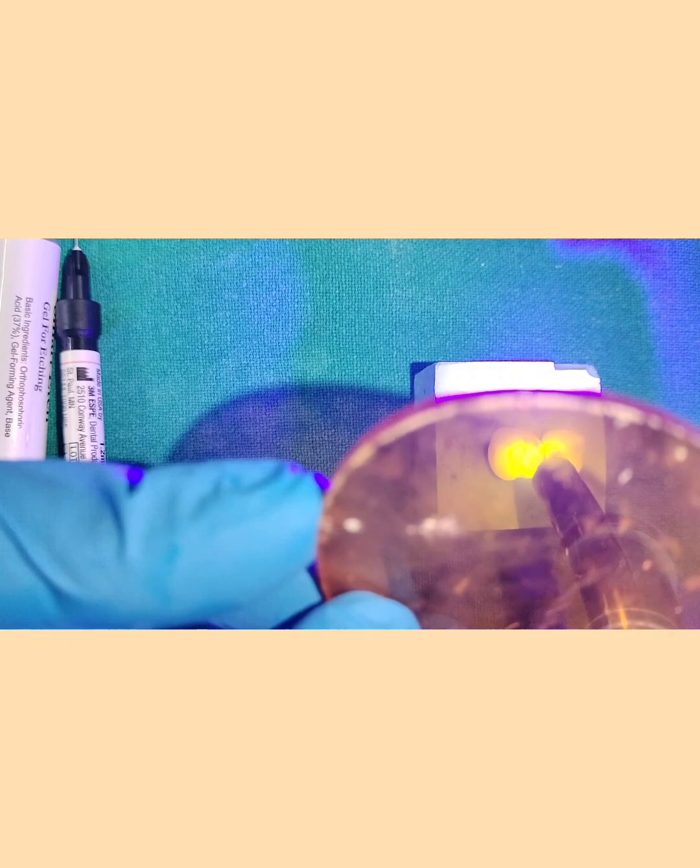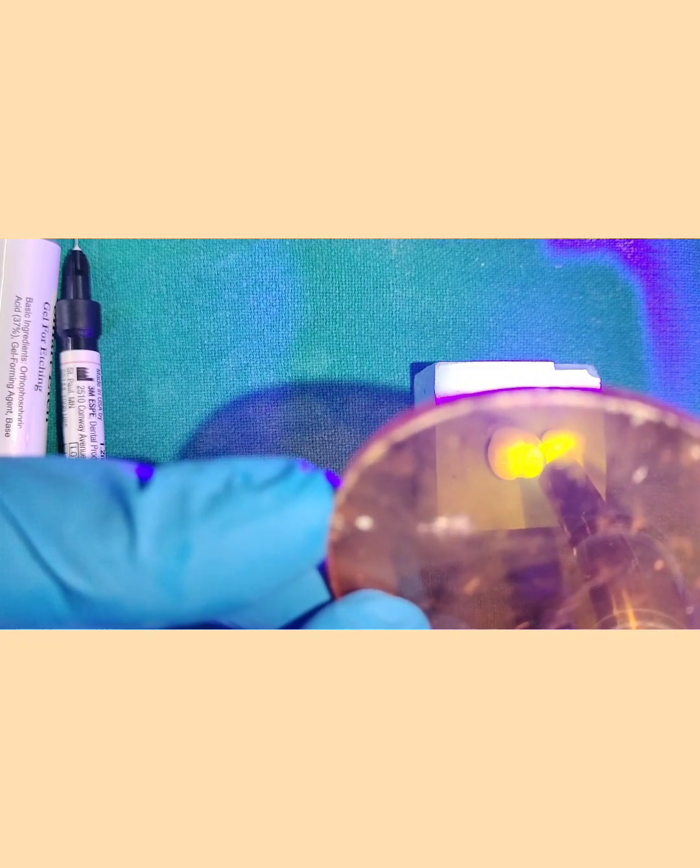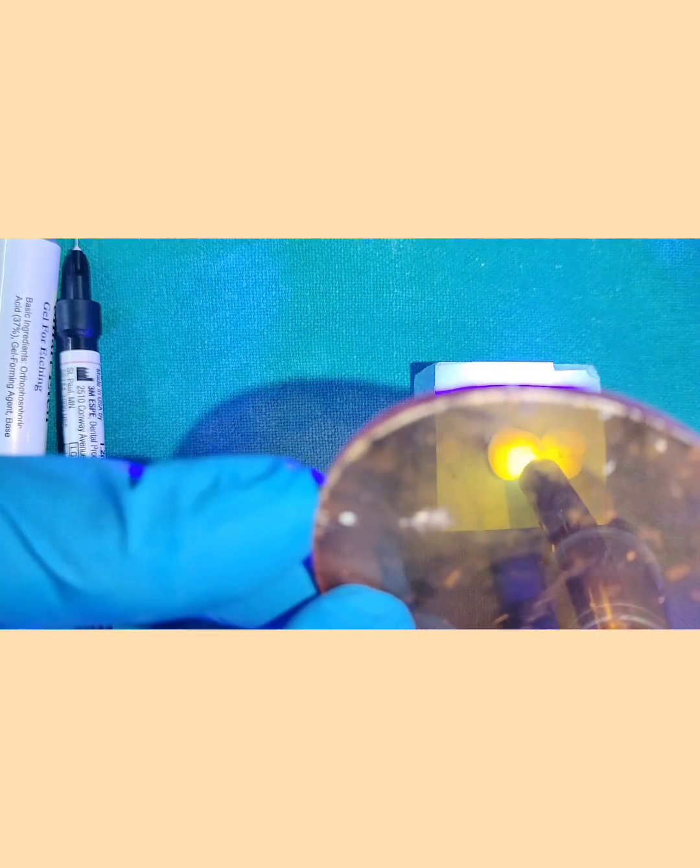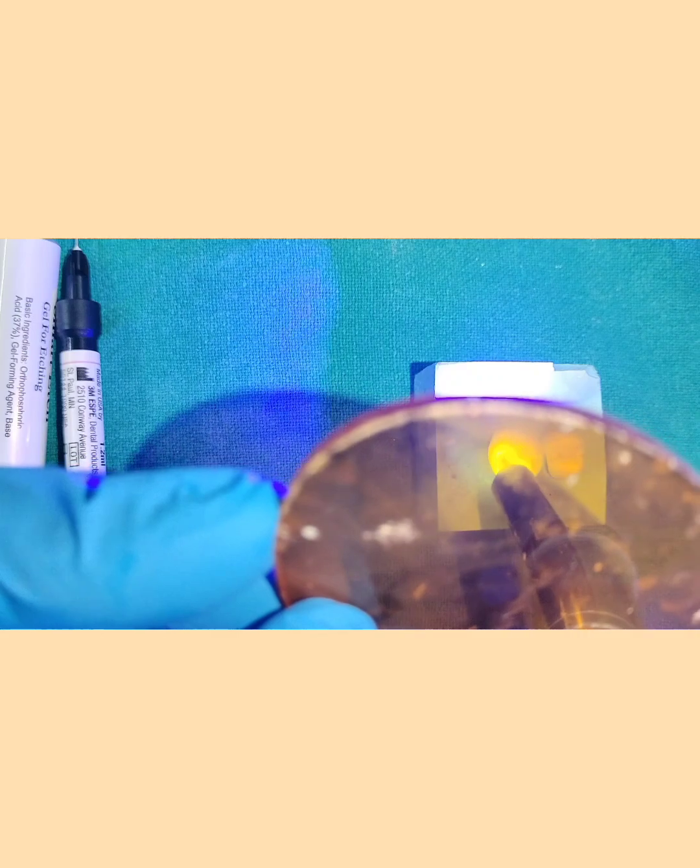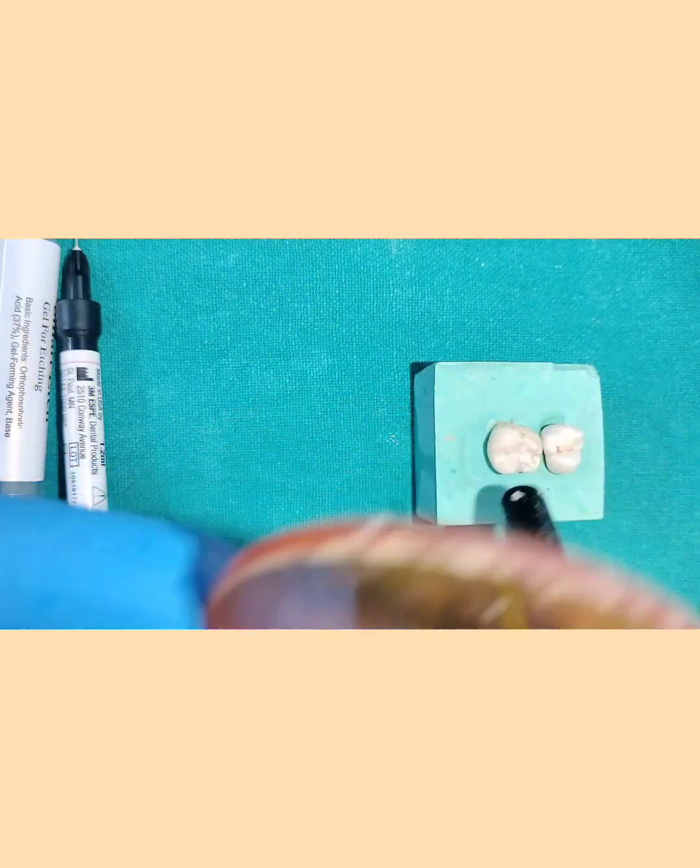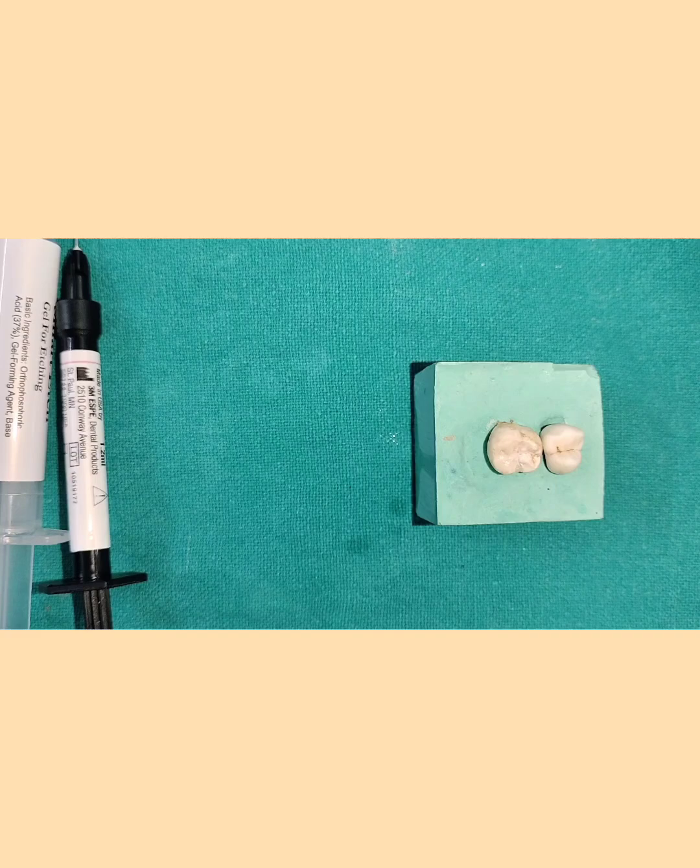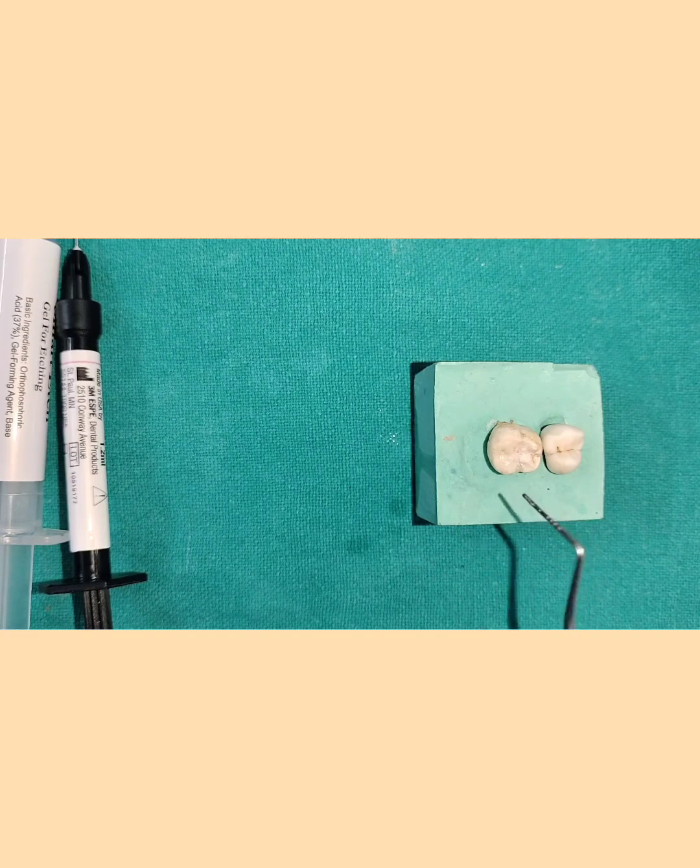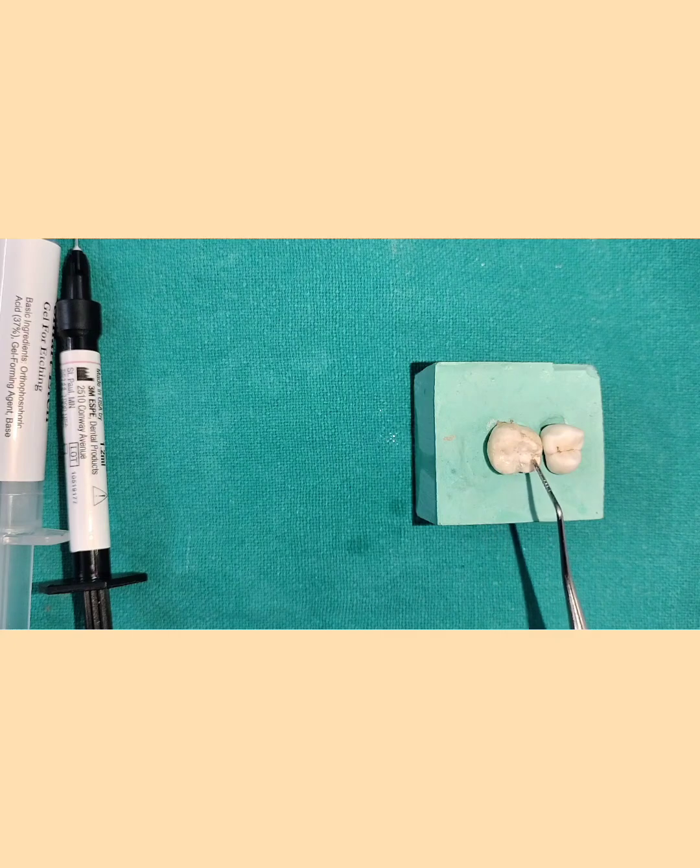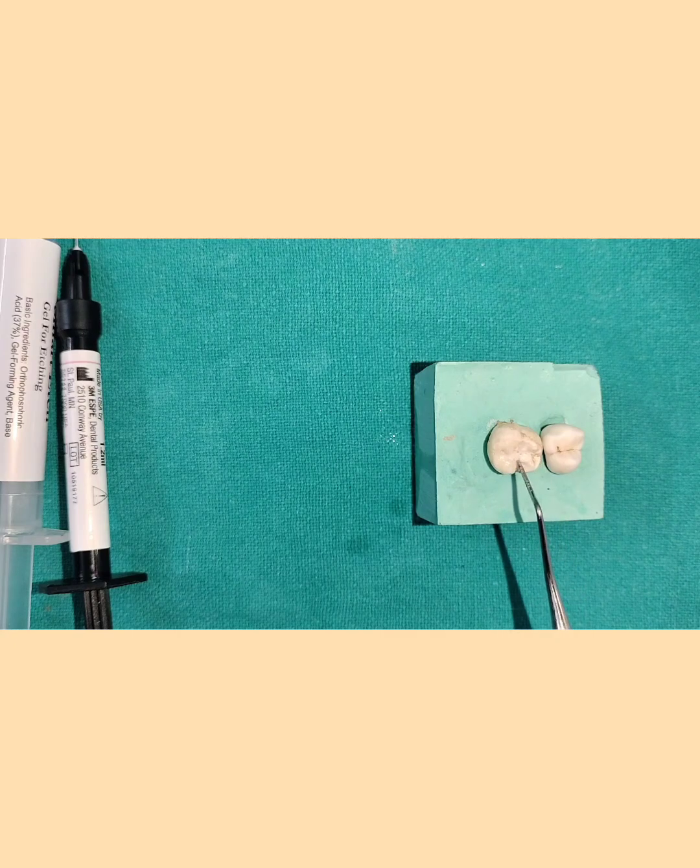20 to 30 seconds. Allow this to be completely polymerized. That is 20 to 30 seconds of each surface. Now if you can appreciate the color is changed in this area where you had applied the pit and fissure sealant. So this color is changed.